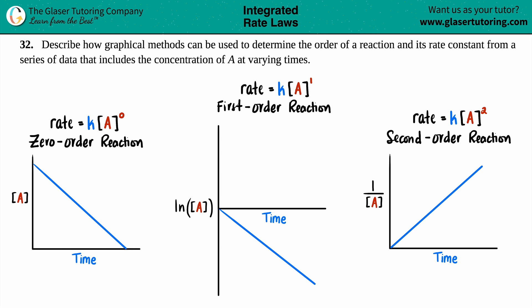Number 32. Describe how graphical methods can be used to determine the order of a reaction and its rate constant from a series of data that includes the concentration of A at varying times. Okay, so we have a big mess over here, but I promise by the end of this video we will understand everything that's going on. Now all we have to do is basically talk about how using different types of graphs, that's why there's different types of graphs here.